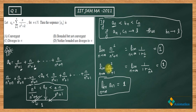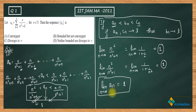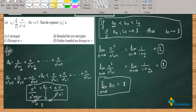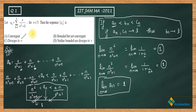So to summarize: we have used the sandwich principle to show that a_n converges to 1. Since a_n converges to 1, it is pretty much clear that option A — convergent — is correct, and options B, C, and D are incorrect.